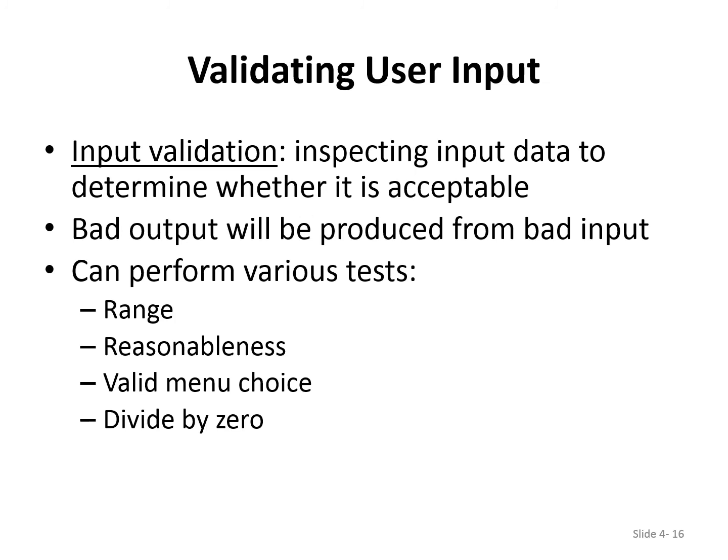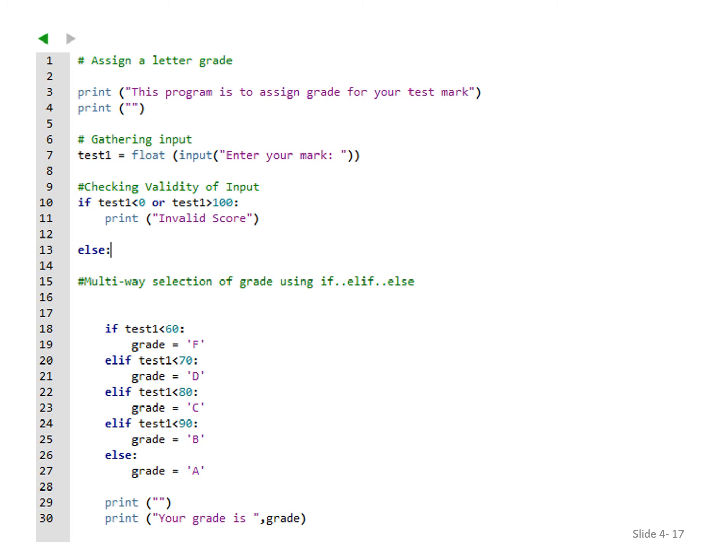Input validation is inspecting input data to determine whether it is acceptable. Bad output will be produced from bad input — rubbish in, rubbish out — so you need validation. You can perform various tests such as range, reasonableness, valid menu choice, and divide-by-zero. For example, anything divided by zero will give an error because the result is infinity.